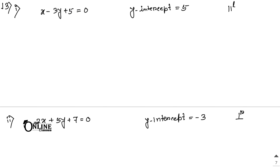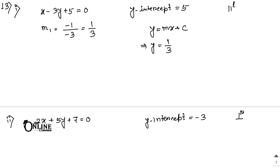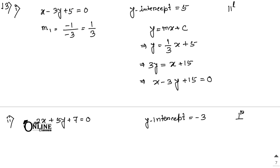Sum 13(i): find the equation of a line parallel to x minus 3y plus 5 equal to 0 with y-intercept 5. The slope of the given line is 1/3. Since the lines are parallel, the new line has slope m equals 1/3 and c equals 5. So y equals 1/3 x plus 5, giving x minus 3y plus 15 equal to 0 as the final answer.